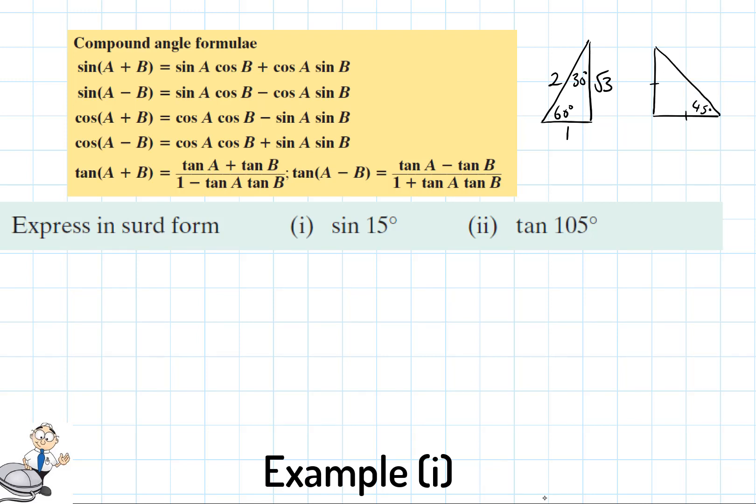In this question we are asked to evaluate sine 15 degrees. Now you could just put this into the calculator and it will give you the answer in surd form. But we could also use the knowledge that we have of 30, 60, and 45 to evaluate it. Because sine 15 degrees will be the same as sine 45 degrees take away sine 30 degrees, because 45 take 30 is 15 degrees.